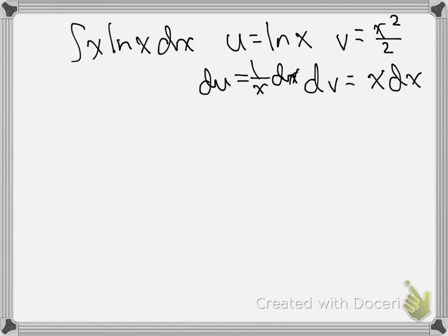The reason we chose it this way is because we know the derivative of ln of x, the anti-derivative of ln of x is not trivial. But we can find the anti-derivative of x very easily. Now we're going to see, this is going to work out pretty nice for us as we put things back.